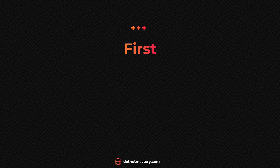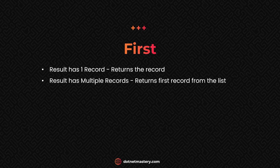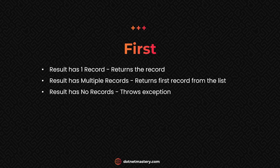Now we also have First, which is also used to retrieve one record. If the result has one record, it returns that record — exactly the same as Single. The key difference is when there are multiple records: First will retrieve the first record from the collection rather than throwing an exception. However, if the result has no records, then First will again throw an exception, just like Single.